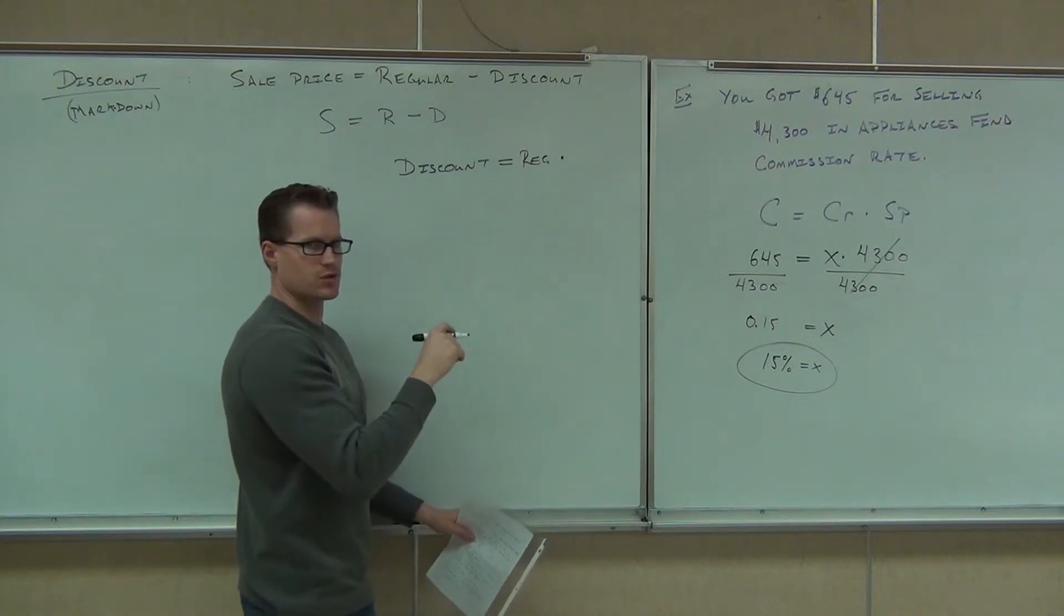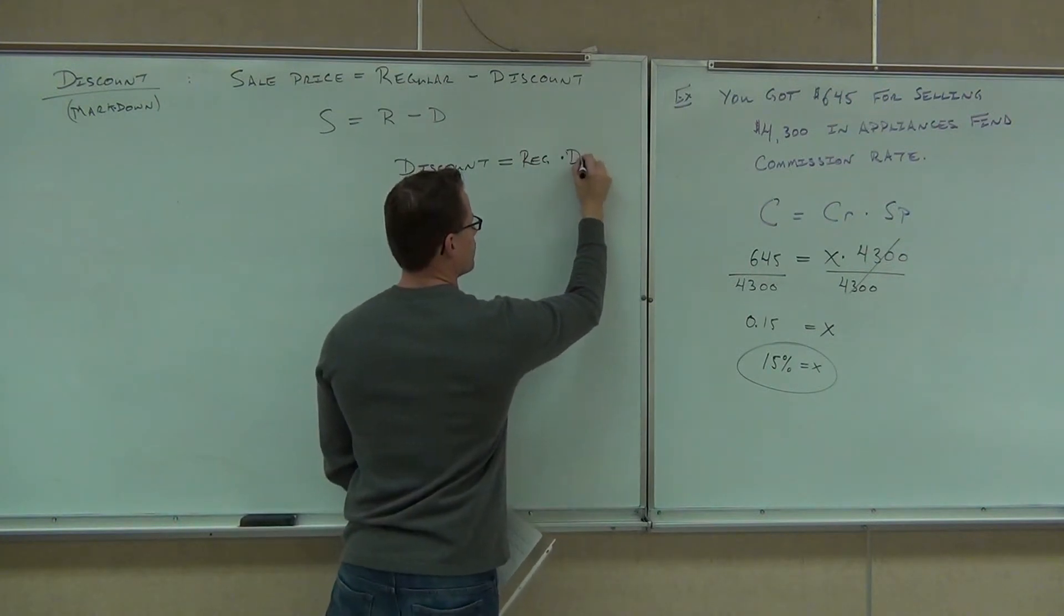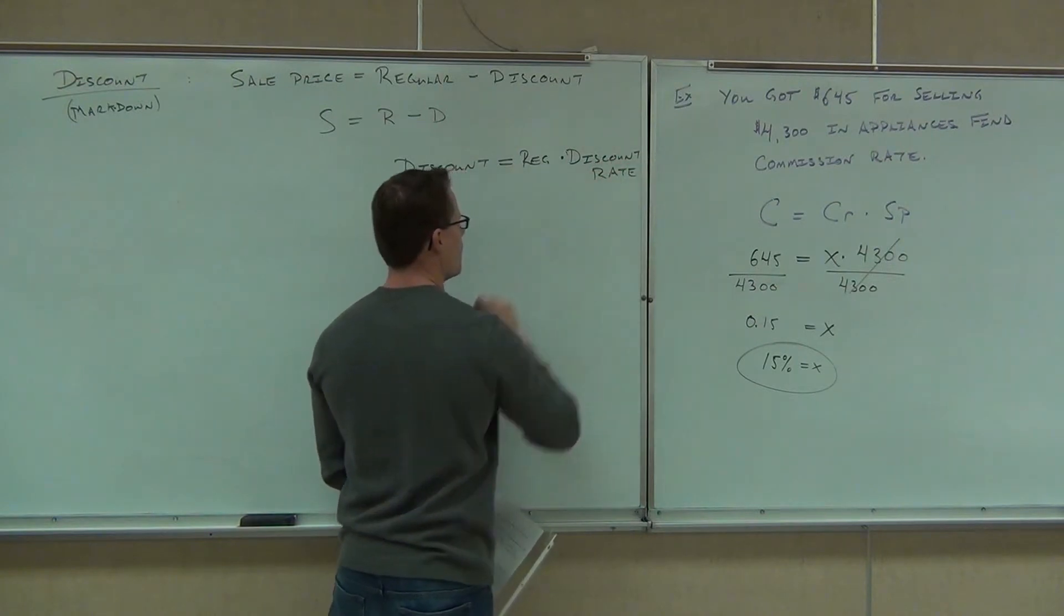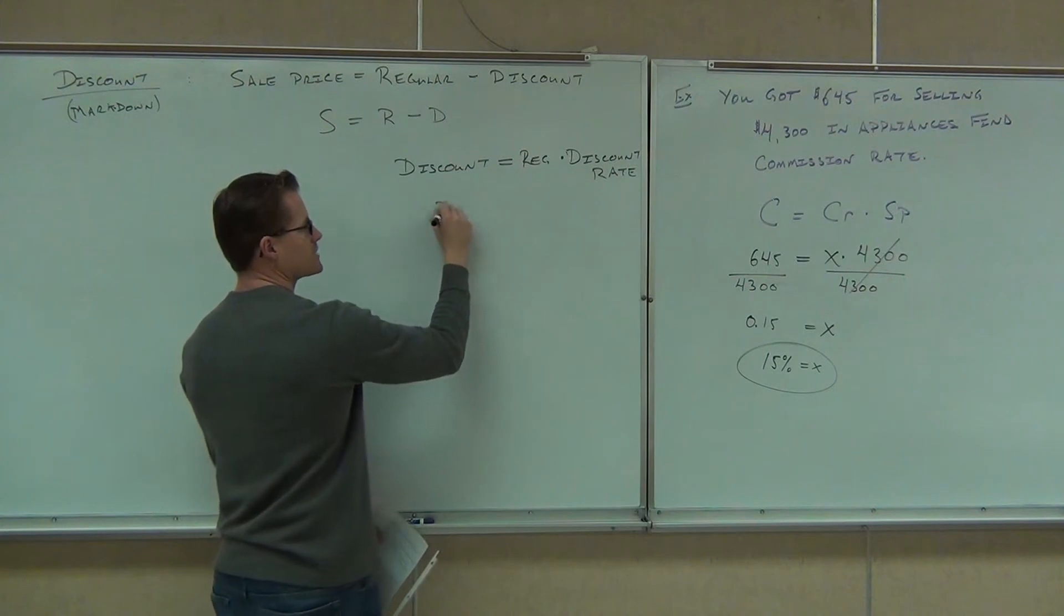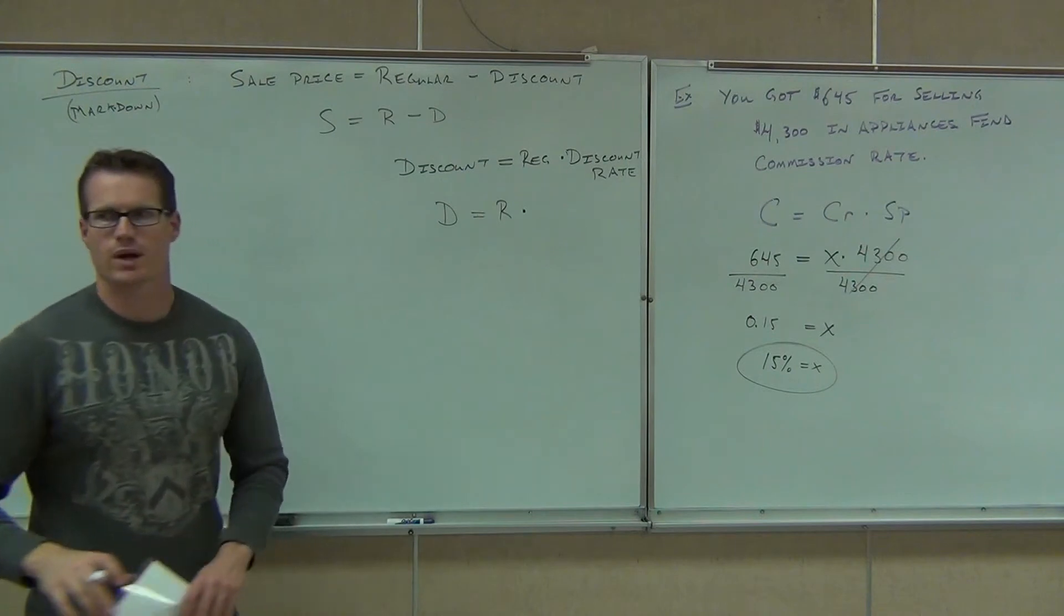Times a discount rate. If they're doing a 10% sale, the discount rate will be 10%. In other words, discount equals the regular price item times the discount rate.